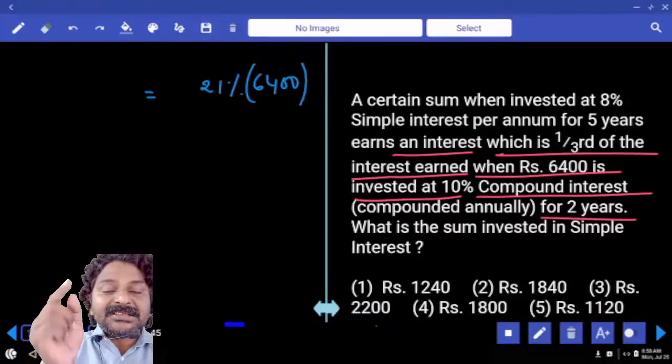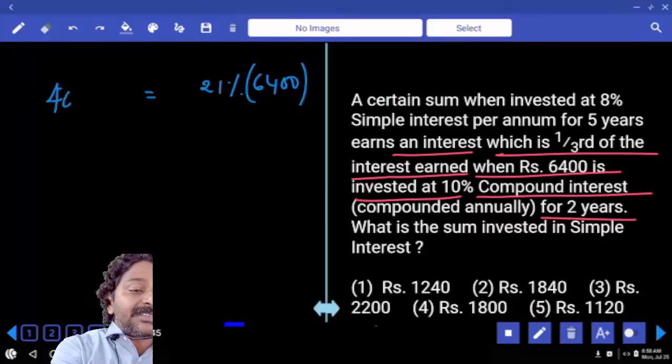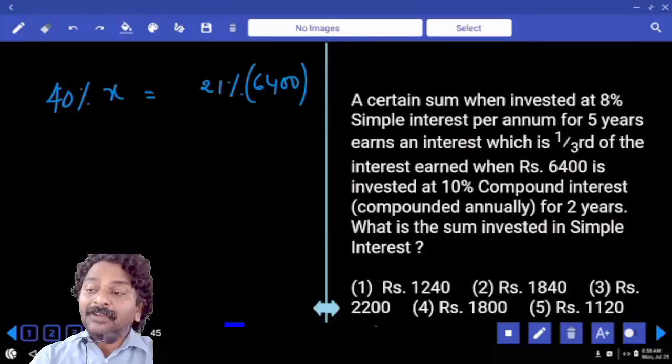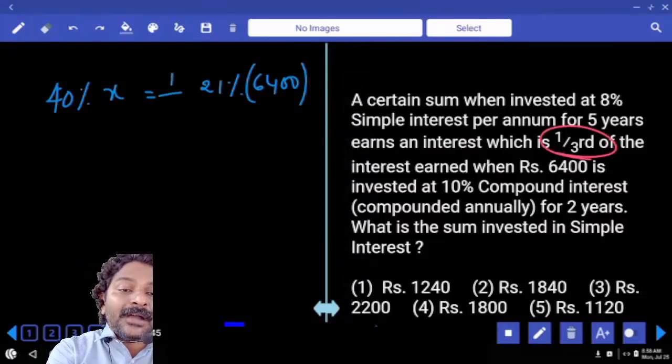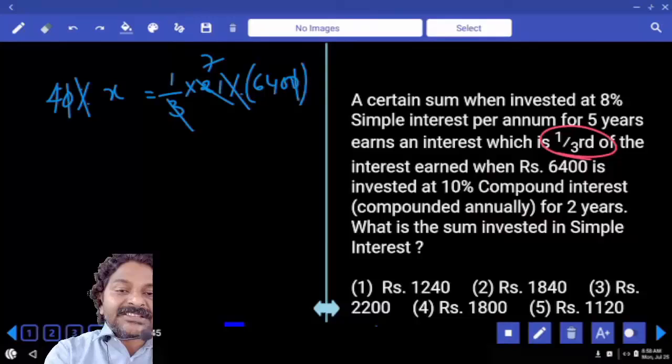This is the compound interest obtained. The interest from the first scheme is 40% of x rupees, and that equals one-third of this. Setting up the equation: the percentages cancel, 21 divided by 3 gives 7, and the zeros cancel when dividing 6400 by 40.